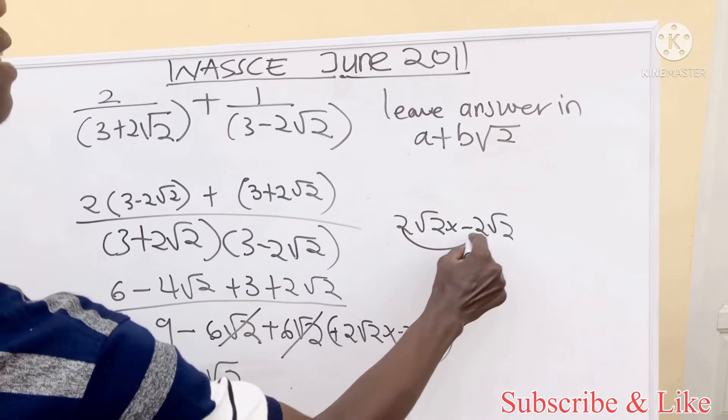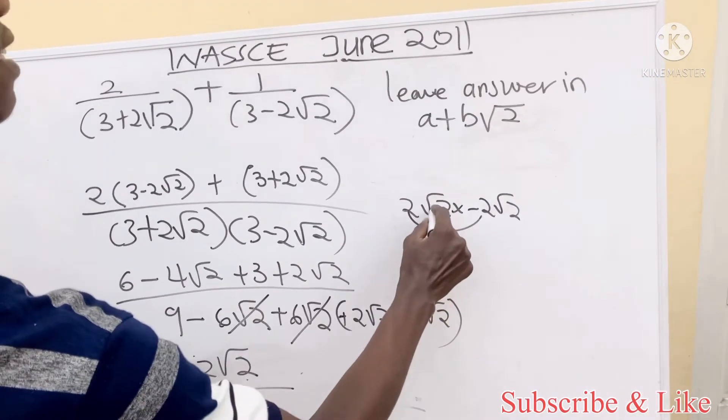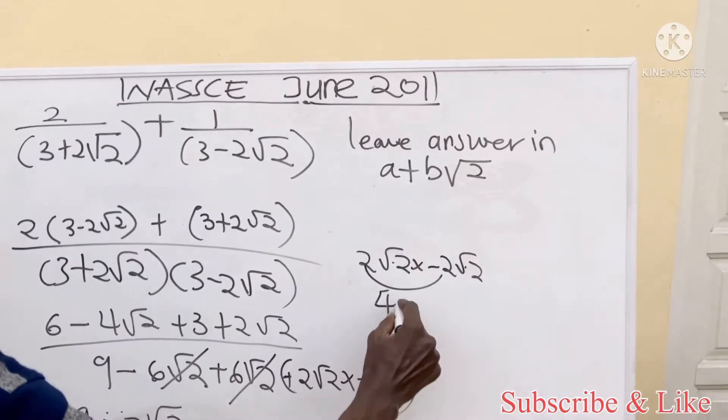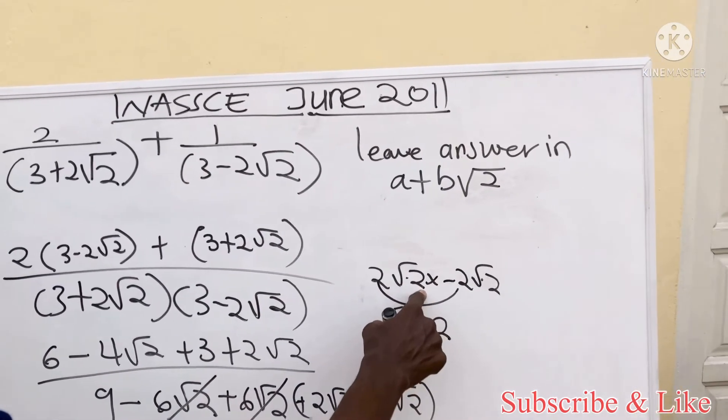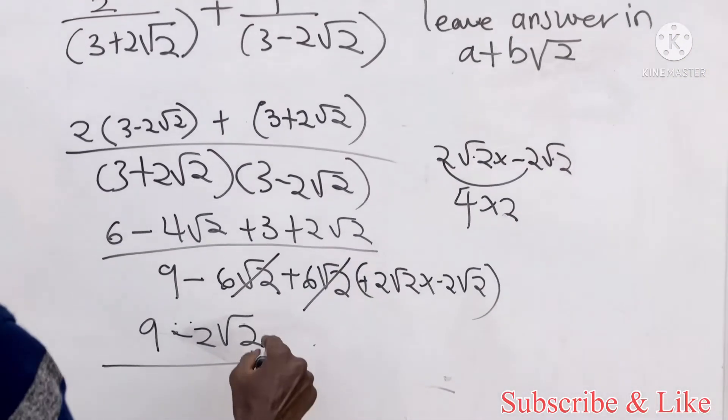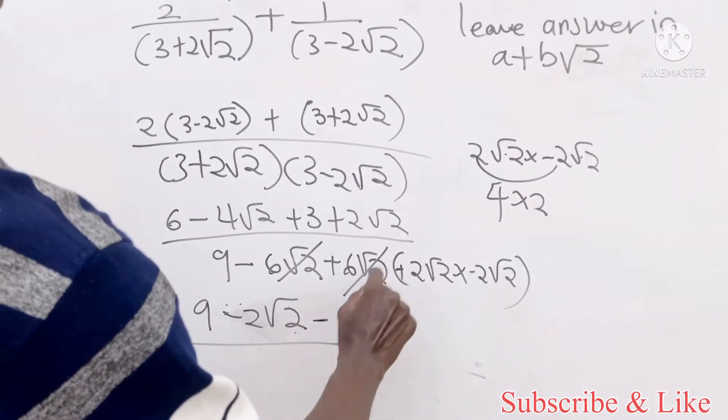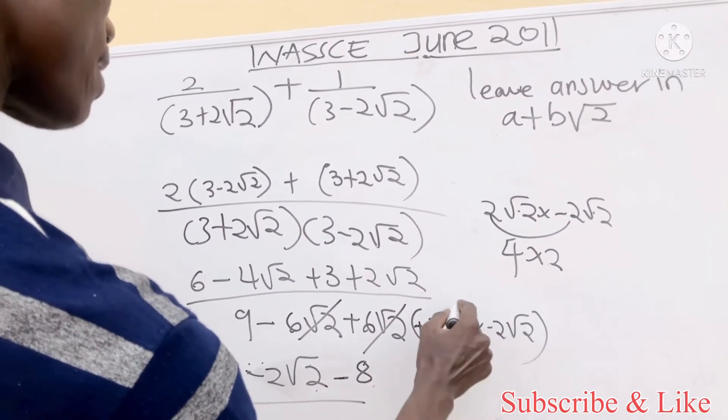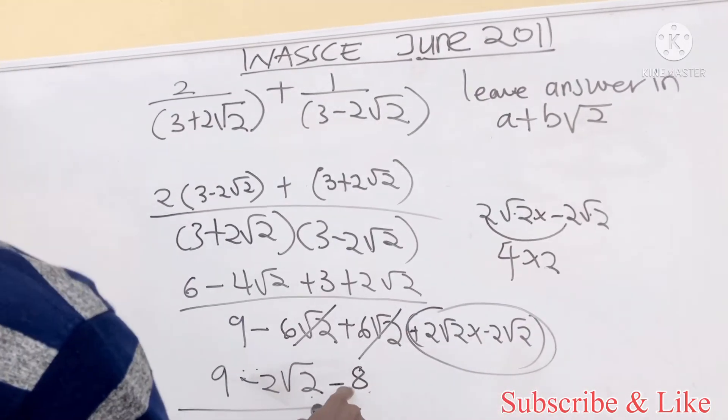Here we have to expand this part. If you have something like this, it should be this times this, which is four. This times this is two root two times root two, which is two. So here is minus eight.